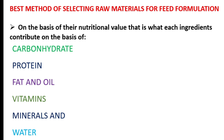First, we are going to select our ingredients on the basis of nutritional value — that is, what each ingredient contributes in terms of its carbohydrate content, protein content, fat and oil content, vitamins, minerals, and water content. We are going to consider all six classes of food during the formulation, and all these classes of food should be present.